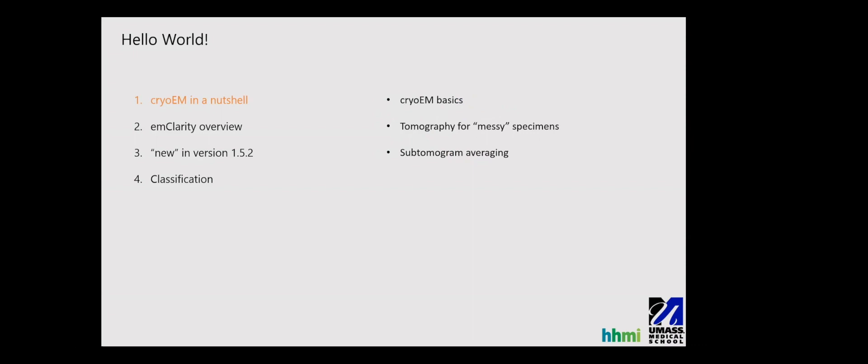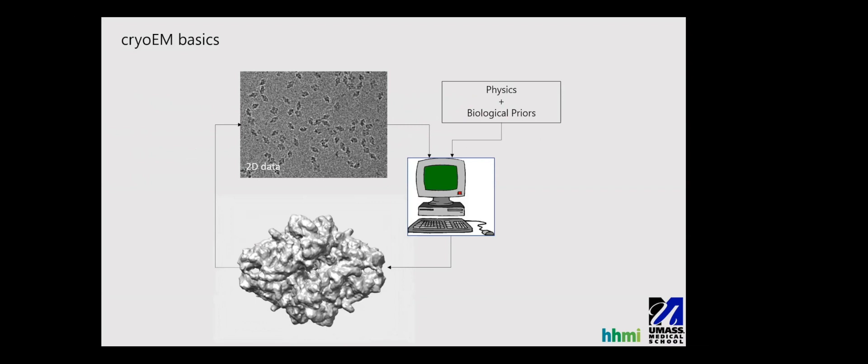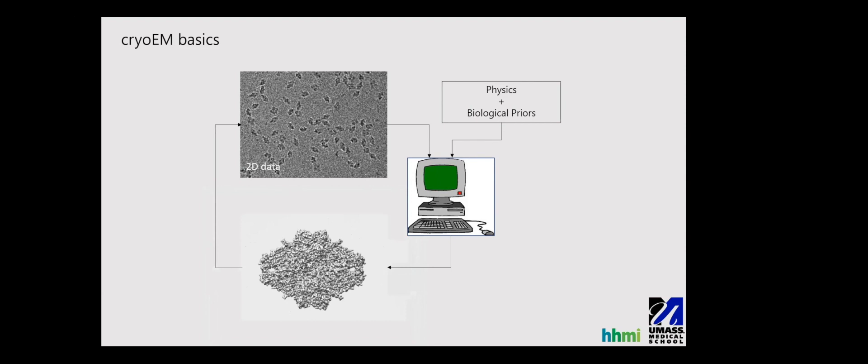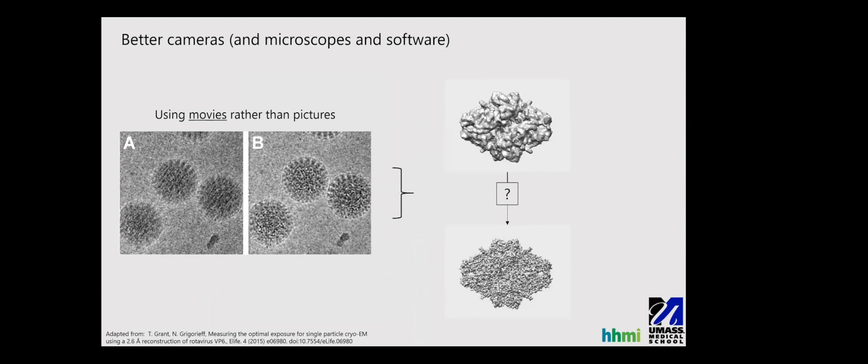So anyone that's had the pleasure or misfortune of using EMClarity knows that it can be a little tricky to use. And part of that comes from the fact that it's just a command line operating tool. So I figured I'd add some of the things that I do when I script. So in prepping for this presentation, it took me a couple hours to remember how to use EMClarity too. So I'll put some things there to make your lives easier. In addition, I'm linking to the EMClarity wiki, which has some tutorials and also a mailing list where you can ask questions. So cryo-EM in a nutshell, I'm going to hit the basics and talk about tomography and then subtomogram averaging.